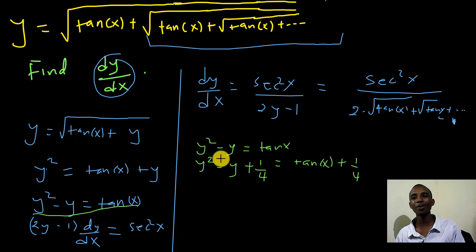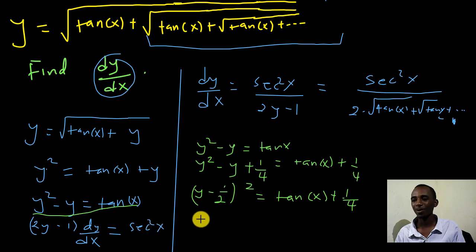So I'll add 1 over 4 here. On this side, I also have the tan of x plus 1 over 4. By adding 1 over 4 here, you can actually prove that this is a complete square. So this is going to be y minus a half squared. That's a perfect square. On the other side, we have tan x plus a quarter.